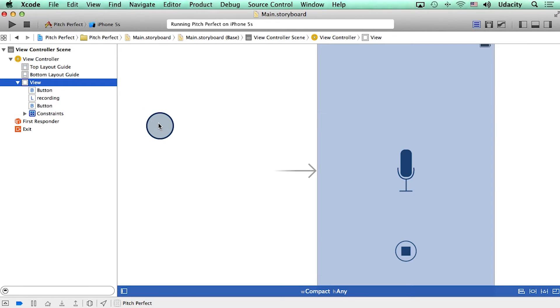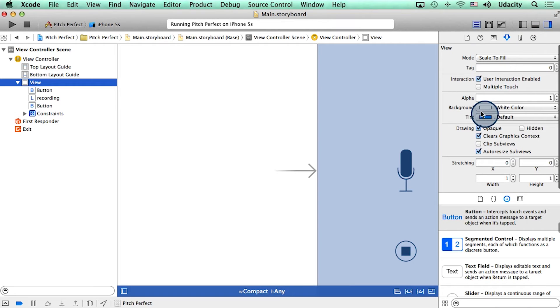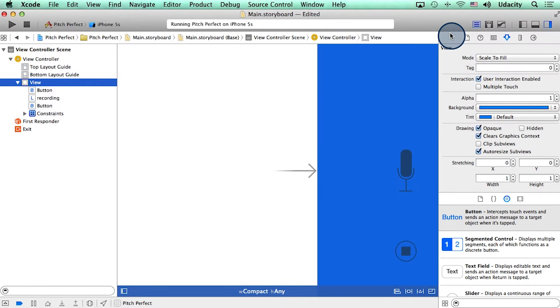To highlight the view on our screen, I can change its background color. I can simply slide out the utility area and change the background color. Boom, done.